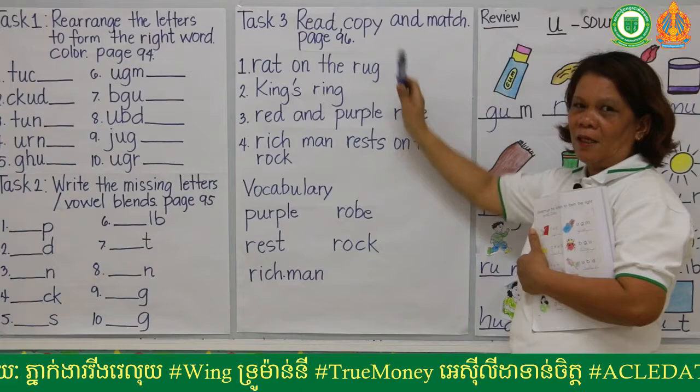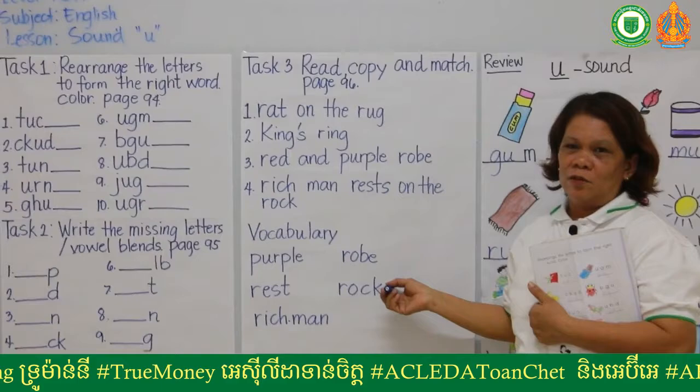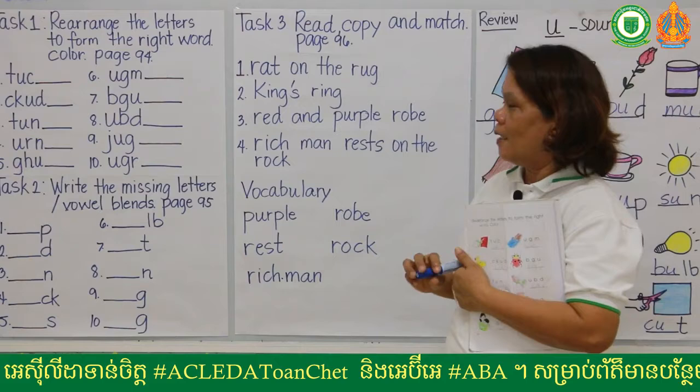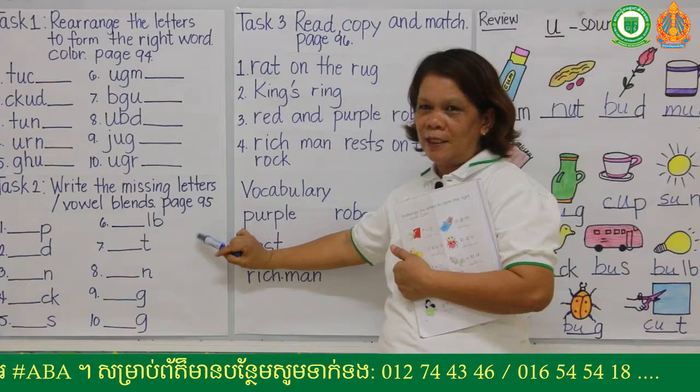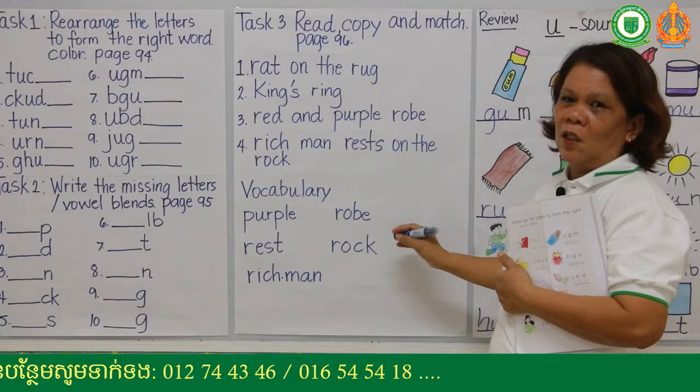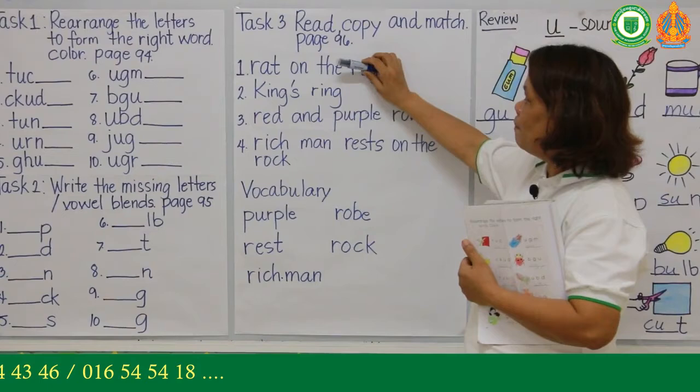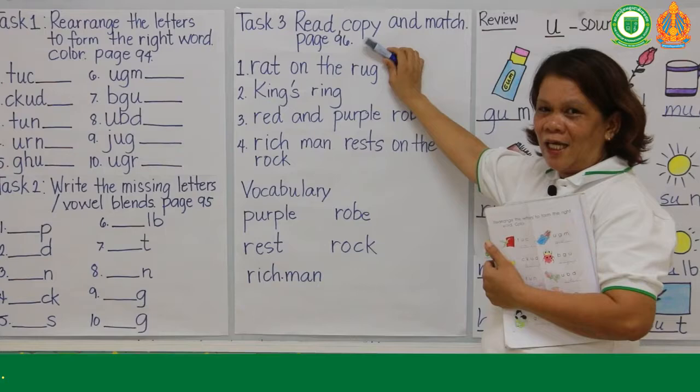After answering this activity you're going to drop it for checking. For each activity I'll be giving you 10 points — so page 94 is 10 points, page 95 is another 10 points, and page 96 is another 10 points. Aside from this, you're going to read the phrases at page 96 for another 10 points. I'll give you 15 minutes to finish your activity, and for the next video I'll give you your homework.